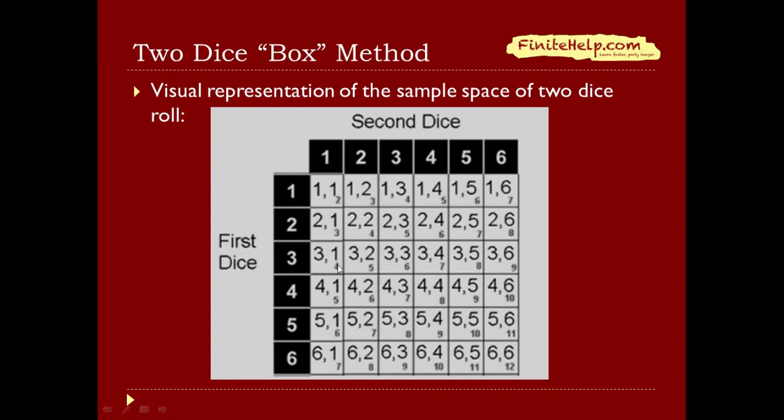Let's say we look at this 3-1. It means that you roll the 3 on the first die, and you roll the 1 on the second die. And when you roll two die, it doesn't really matter which one's first, which one's second.